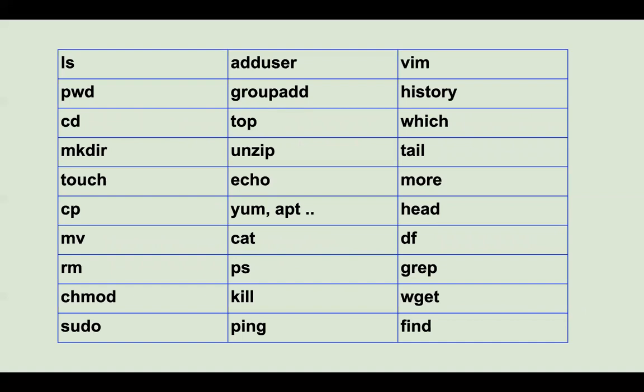First of all you have 'ls' — ls lists files. Then 'pwd' — pwd is present working directory. After that you have 'cd' — cd is change directory. Then you have 'mkdir' — mkdir is make directory.